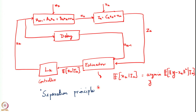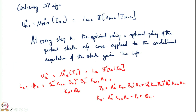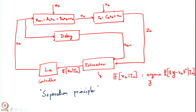Now putting all this together, we can describe what the complete solution to a linear quadratic Gaussian problem is. A linear quadratic Gaussian problem is one where the noise Wk and noise Vk are Gaussian with mean 0, are independent Gaussian, and the initial state is also Gaussian.